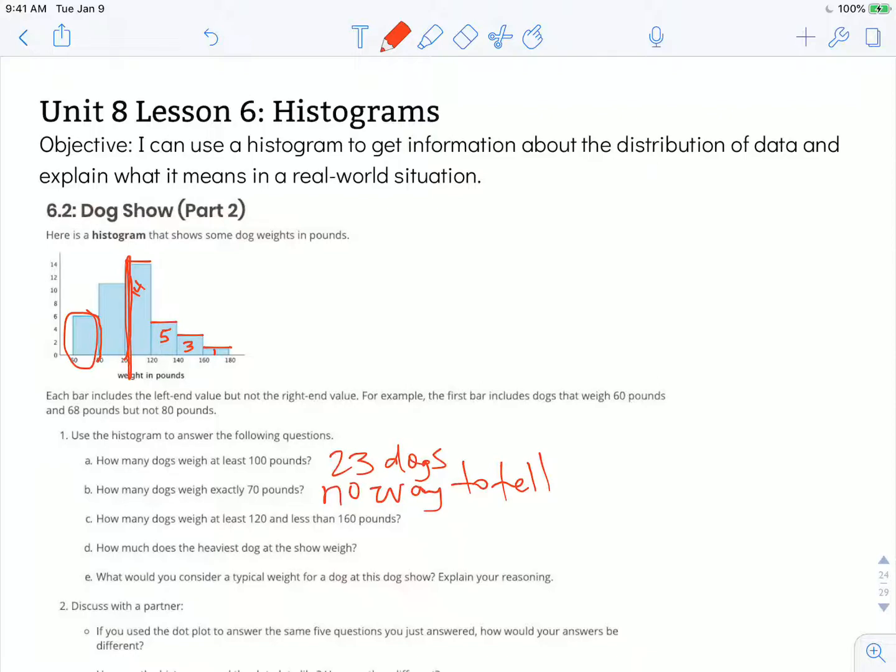Let us see how many dogs weigh at least 120 and less than 160 pounds. So we're just going to be looking at this section right here. So 120 starts right there, going to less than 160. So we'd have a total of 8 dogs.